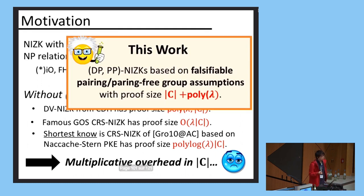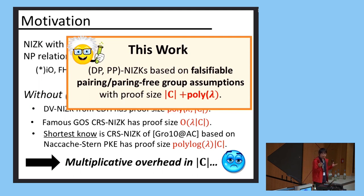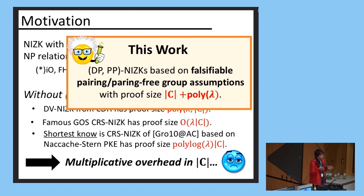And this is what we did in this work. We construct a designated prover and a preprocessing NIZK based on falsifiable pairing or pairing-free group assumptions with proof size that is additive in the circuit size. So it's going to be the circuit size plus poly lambda.